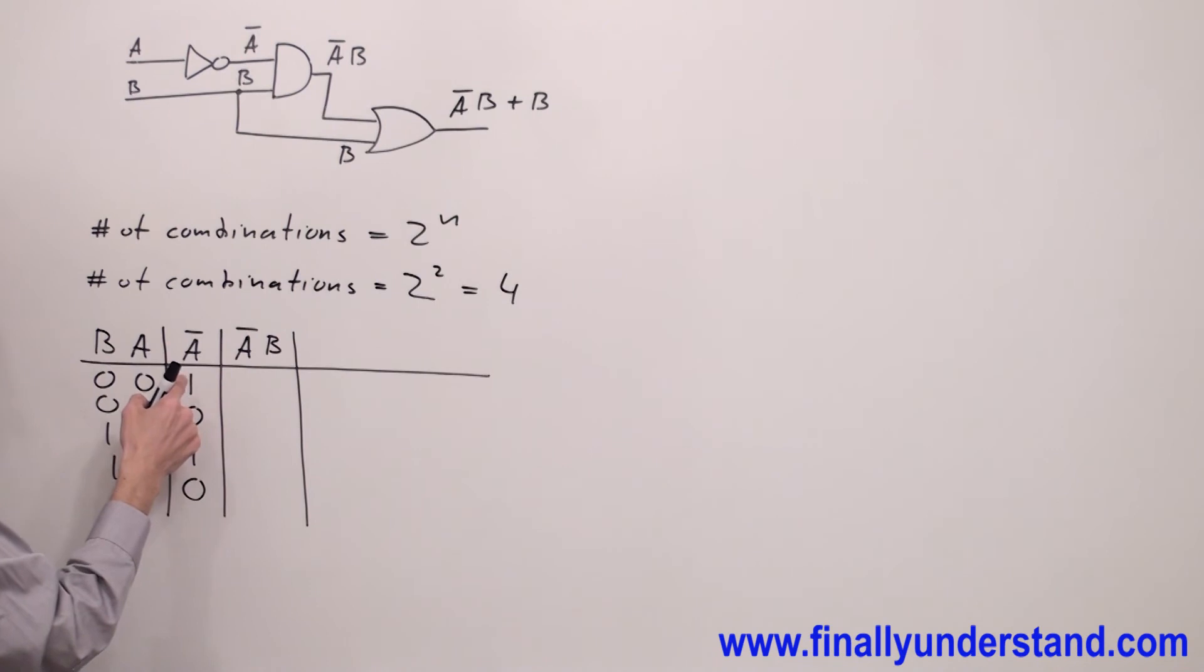I have to AND this column with B. 1 AND 0 gives me 0. This is simply AND gate. 0 AND 0 gives me 0. 1 AND 1 gives me 1. 0 AND 1 gives me 0. Please notice that this is multiplication. 1 times 0 gives me 0. 0 times 0 gives me 0. 1 times 1 gives me 1. 0 times 1 gives me 0.